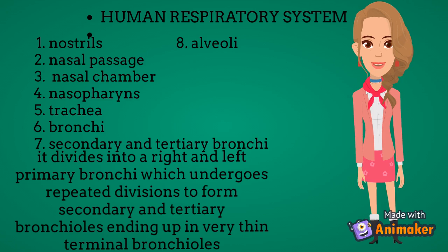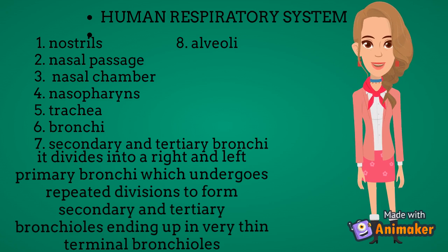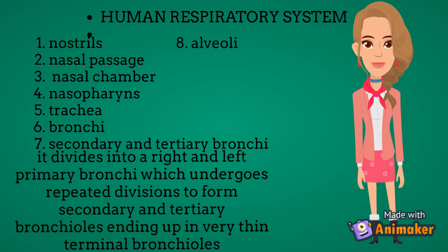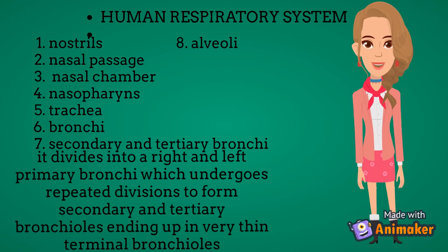The lung is situated in the thoracic cavity, which is anatomically an airtight chamber. The thoracic chamber is formed dorsally by the vertebral column, ventrally by the sternum, laterally by the ribs, and on the lower side by the dome-shaped diaphragm.